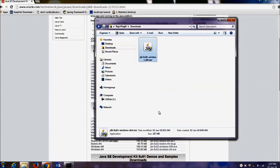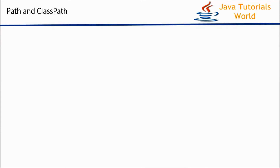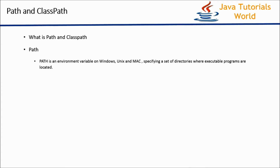We have completed our installation. To compile and run a Java program, installation of Java alone is not enough — we also have to set PATH and CLASSPATH. First I will explain what PATH and CLASSPATH are, then I will show how to set them. PATH is an environment variable on Windows, Unix, and Mac operating systems, used to specify the set of directories where executable programs are located.